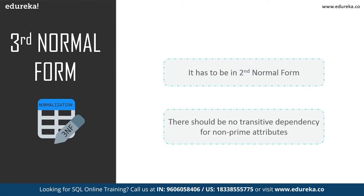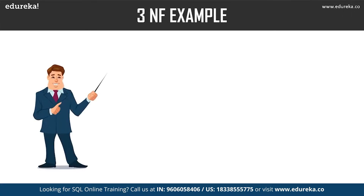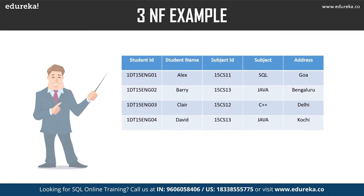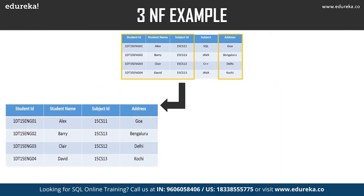All non-prime attributes must depend only on the prime attributes. Third normal form was designed to eliminate undesirable data anomalies, reduce the need for restructuring over time, and make the data model more informative. In the example table, student ID determines subject ID and subject ID determines subject — therefore student ID determines subject via subject ID, creating transitive functional dependency. This table does not satisfy third normal form.